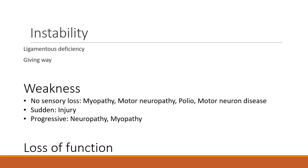Weakness is a neurological feature. If there is no sensory loss, consider a muscle problem such as motor neuropathy, myopathy, polio, or motor neuron disease. If it is sudden, consider an injury to a tendon, muscle, or nerve. If progressive, consider neuropathy or myopathy. Loss of function is the inability of the patient to perform the required function of that limb.